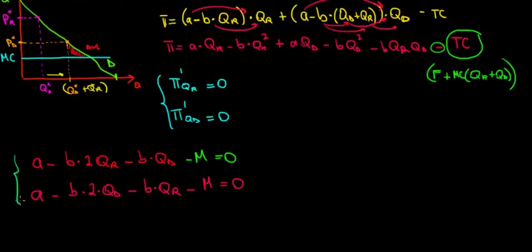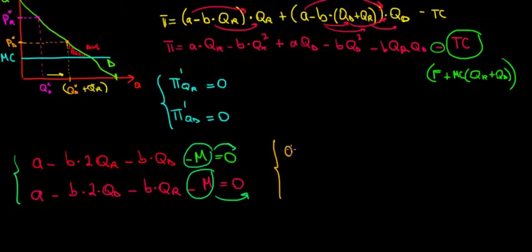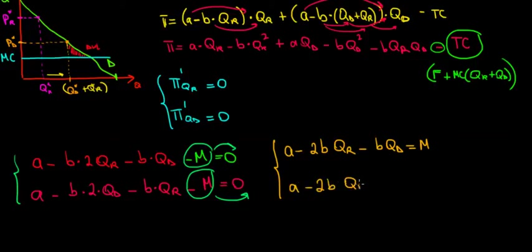Taking these together and solving: we can see m appears in both equations. Let's put them in the same format by moving m to the other side. The first equation becomes: a minus 2b·qr minus b·qd equals m. The second becomes: a minus 2b·qd minus b·qr equals m. It's just rewriting these equations with the m's on the right-hand side.